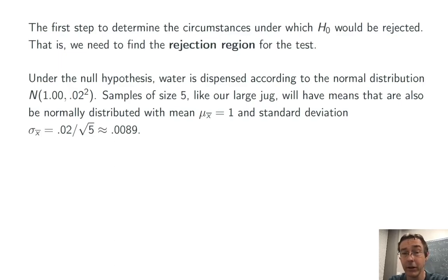Samples of size 5, like our jug, are going to have means that are also normally distributed. And the center of that distribution is going to be exactly the same as the population distribution, 1. And the standard deviation is going to be less by a factor of 1 over the square root of n. So the standard deviation for x bar is going to be 0.02 divided by the square root of 5, about 0.0089.